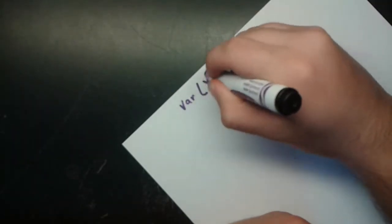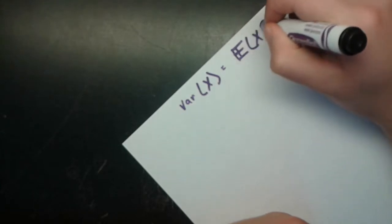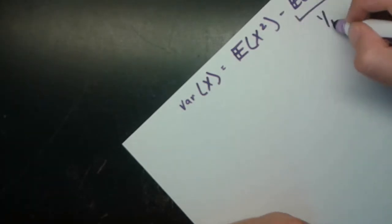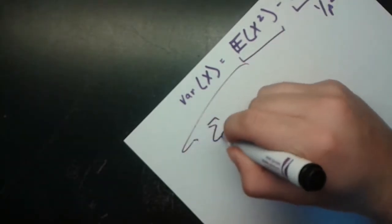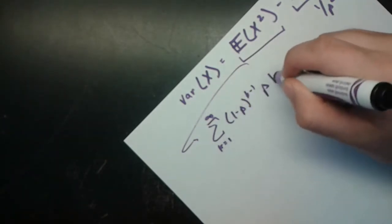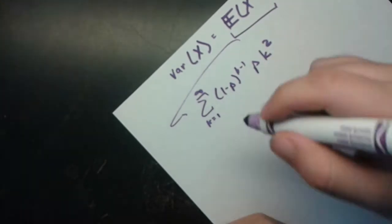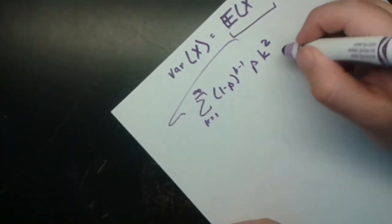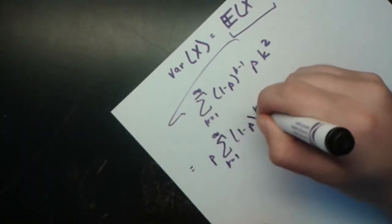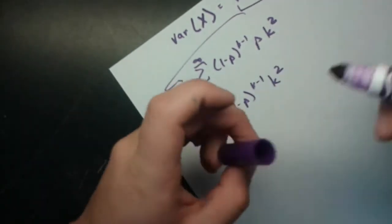Next we find the variance. Using Var(X) = E[X²] minus (E[X])², where (E[X])² equals 1/p², we need to work out E[X²]. By definition, E[X²] is the sum from k equals 1 to infinity of (1 minus p)^(k minus 1) times p times k². Pulling p out front, this looks a bit nasty because of the k² factor.